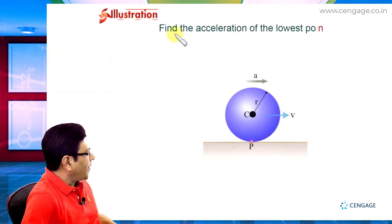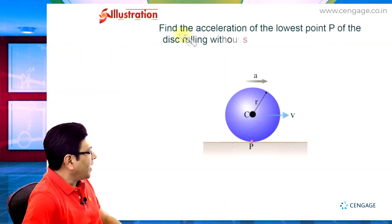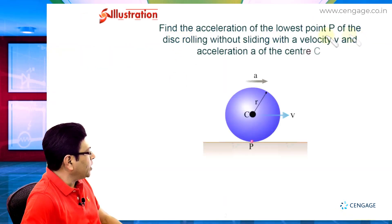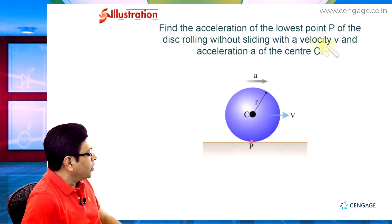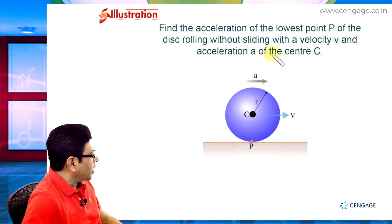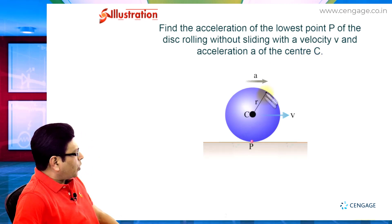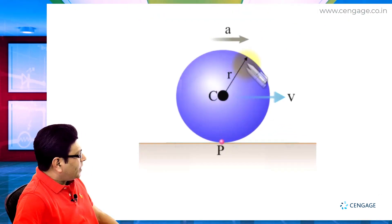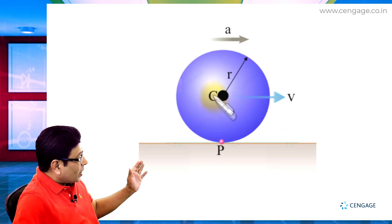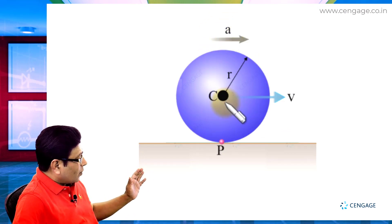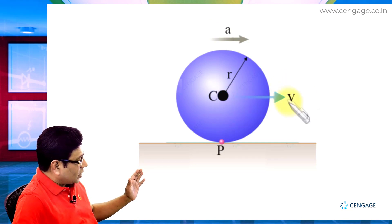In this illustration, it is given: find the acceleration of the lowest point P of the disk rolling without sliding with velocity v, and acceleration a of centre C. You can observe this disk having radius small r, moving with constant acceleration a, and velocity at the time of observation is small v.